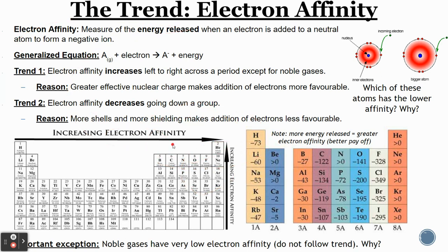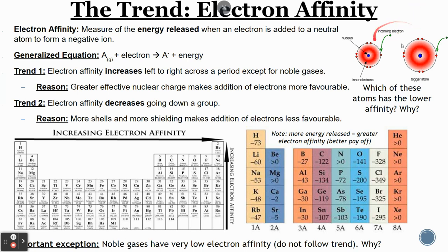Just like any other trend, you should be able to identify elements that have a higher or lower affinity compared to others. Let's look at this example here — which of these atoms has a lower affinity and why? Both atoms are getting an electron coming in, and they differ in terms of size. The bigger atom probably can't receive an electron very effectively because there's more shielding, while the smaller atom will be more receptive because there's less shielding and the nucleus can attract the electron more effectively. So the smaller atom will have a higher affinity.